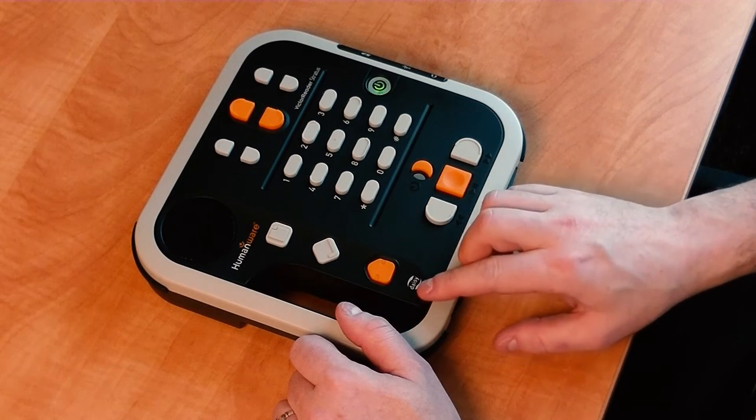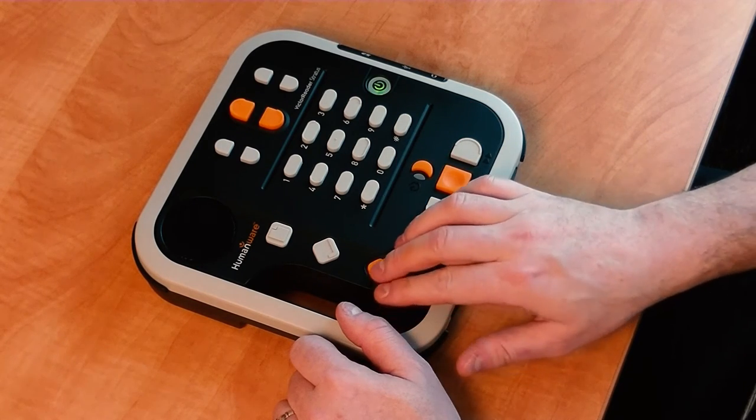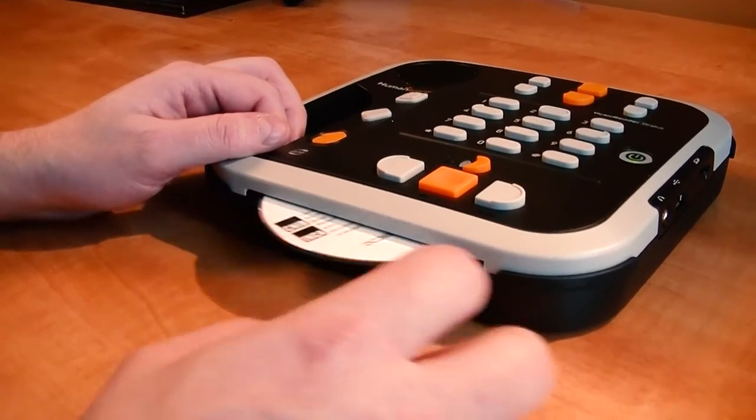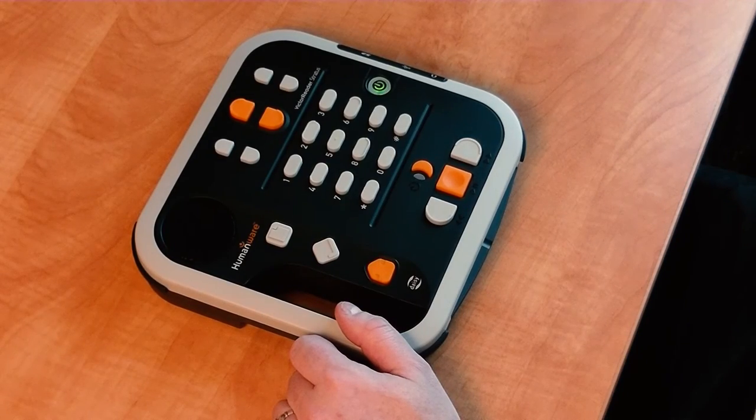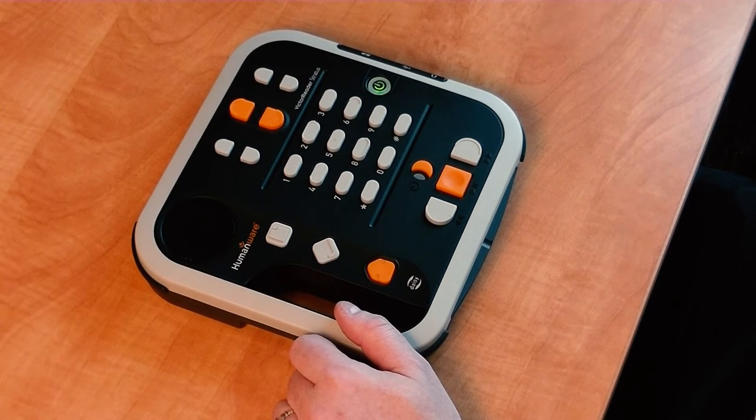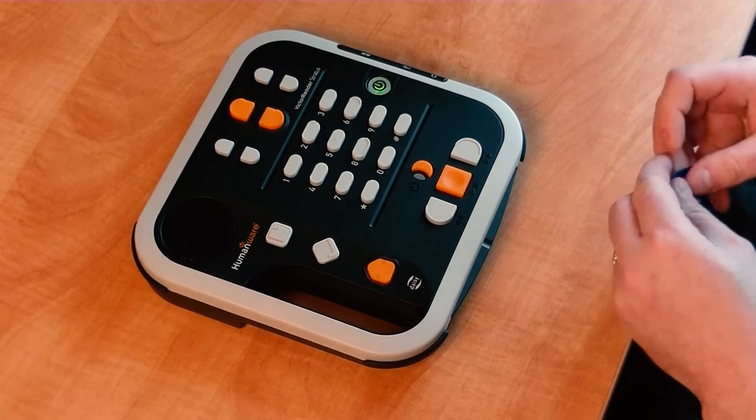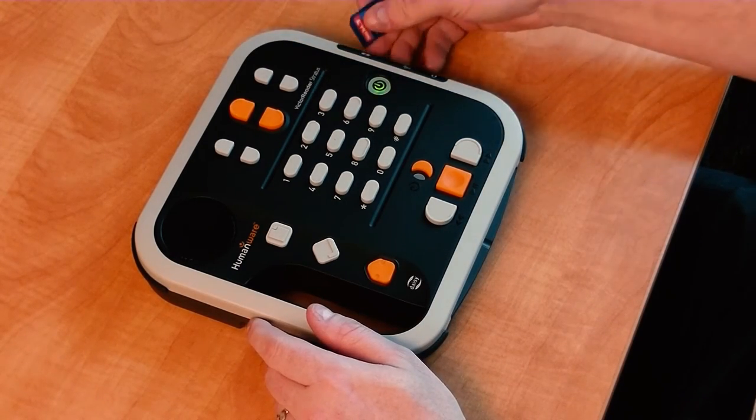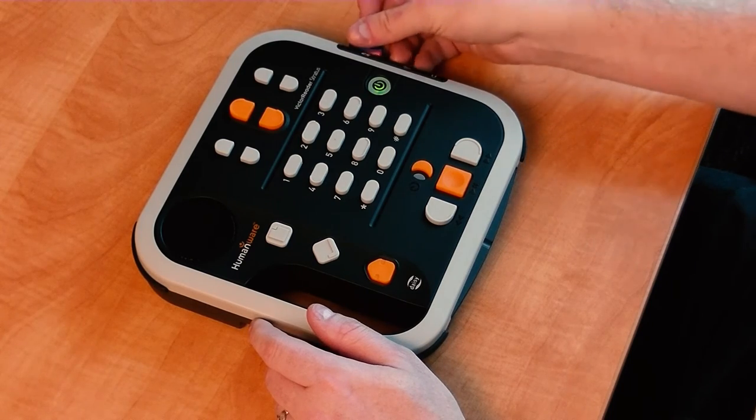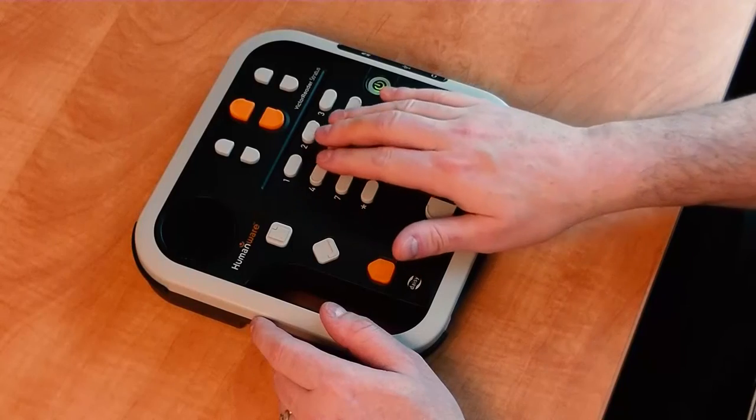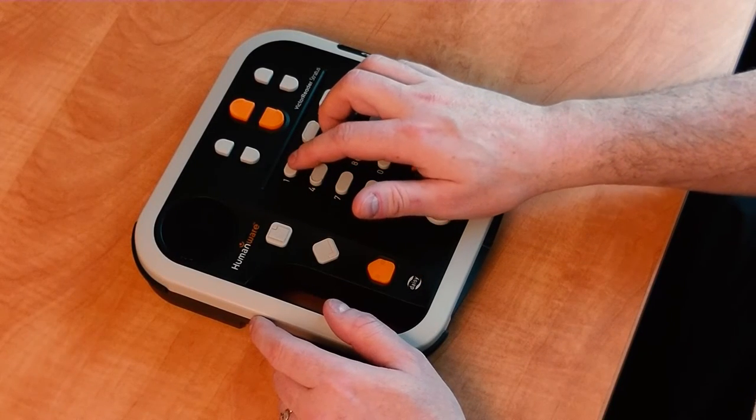I'm going to eject it with the eject button. Now we'll read content off of an SD memory card. The SD memory card slot is on the right hand side of the player.